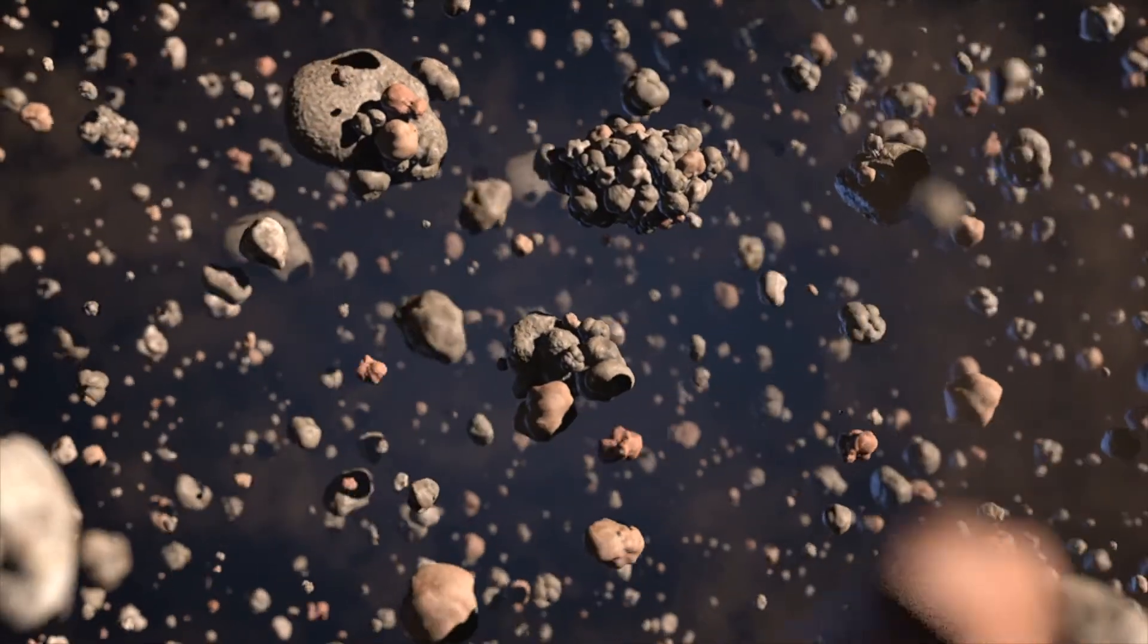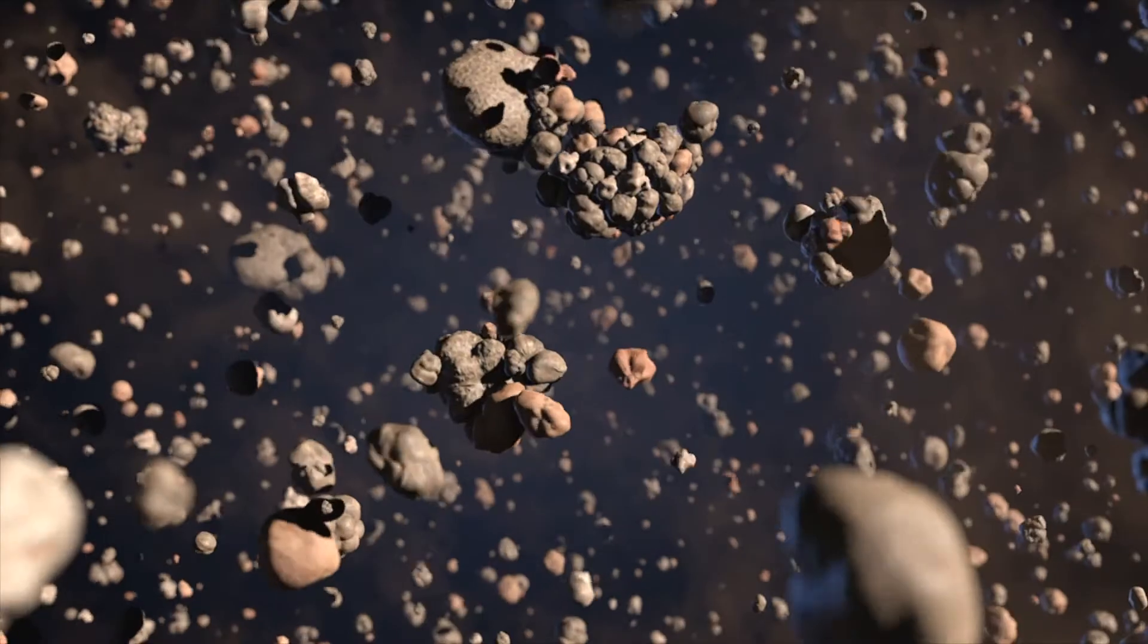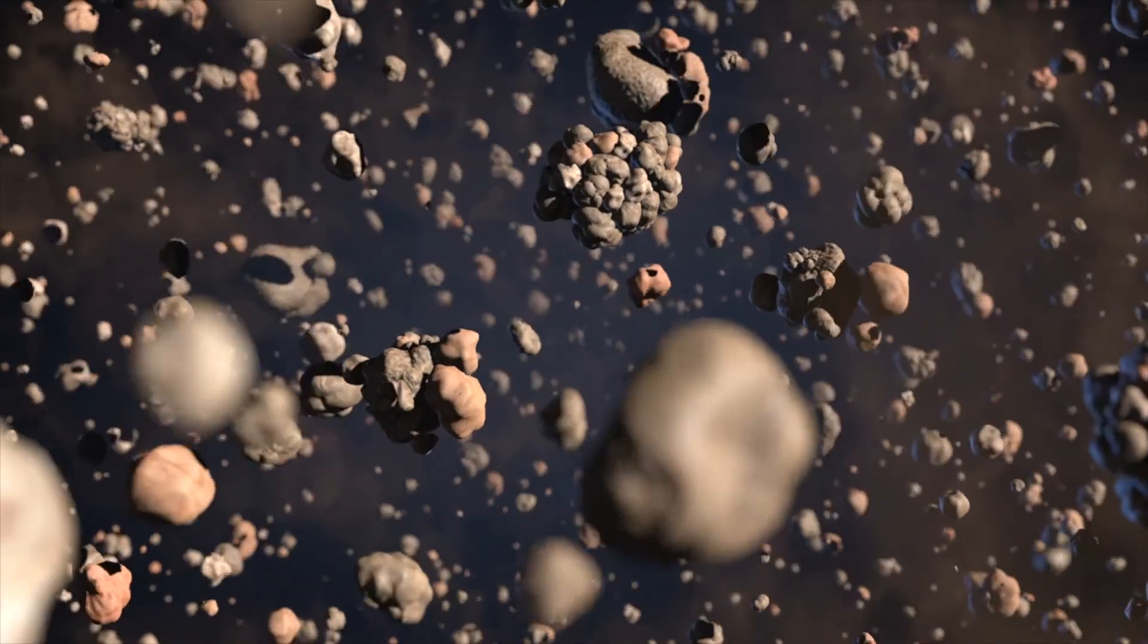The dust is eventually sticking together and building up larger and larger objects which we first call planetesimals. And then when they reach roughly a thousand kilometers in size, we call them protoplanets and they become the seeds for further planet formation.